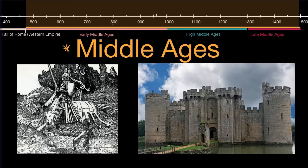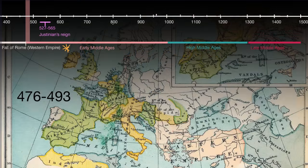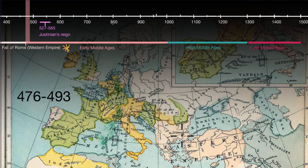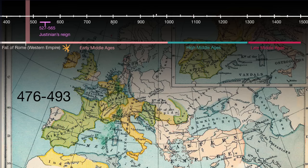Let's start with what Europe looked like right after the fall of the Western Roman Empire. This map refers to the time period between 476, when Odoacer takes over Rome, and 493. You can see the Eastern Roman Empire is still here, but the Western Roman Empire is now fragmented amongst many Germanic kingdoms — the Visigoths, the Franks, the Kingdom of Odoacer. With the fall of Rome, we are entering into the Early Middle Ages.